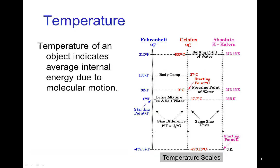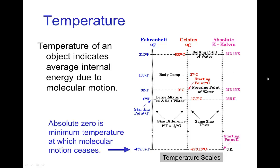Temperature for an object indicates the amount of energy the object has due to the random motion of the molecules. We have different scales for measuring temperature: in the US the Fahrenheit scale, pretty much everywhere else the Celsius scale, and scientists also use the Kelvin scale.